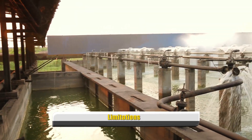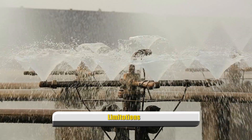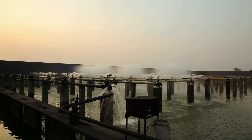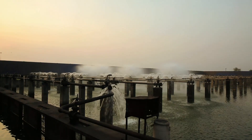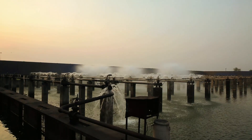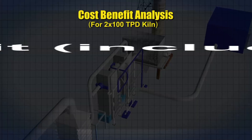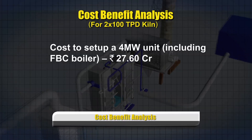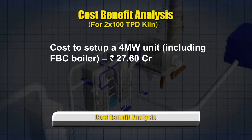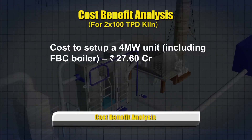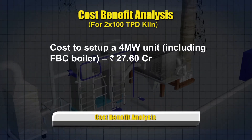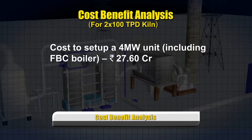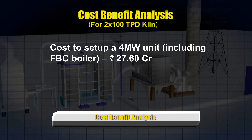WHRB-based power plants also require adequate water supply on a continuous basis. The estimated cost to set up a 4 megawatt power generating unit including an FBC boiler is approximately 27.6 crore rupees.